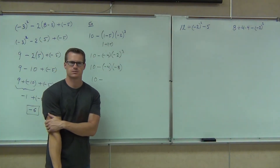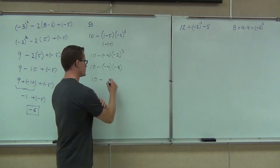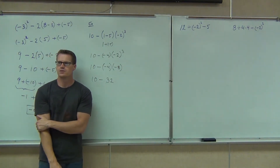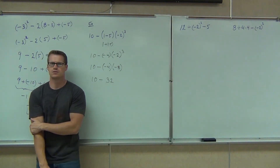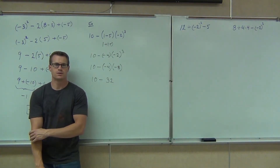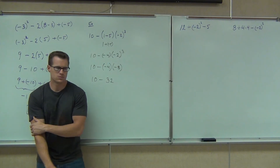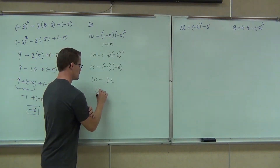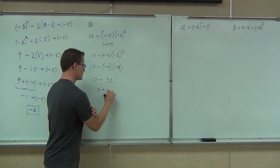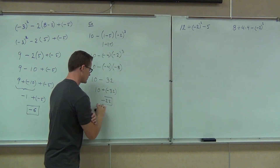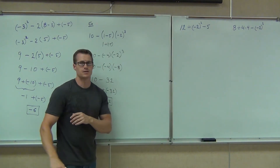Negative or positive? Positive. So we have 10 minus 32. We're going to get negative 22. Negative 22.